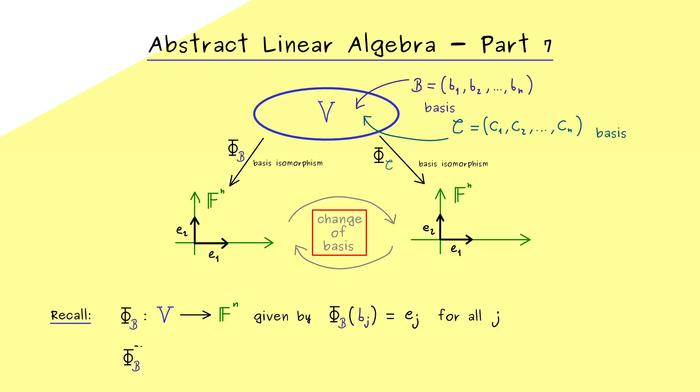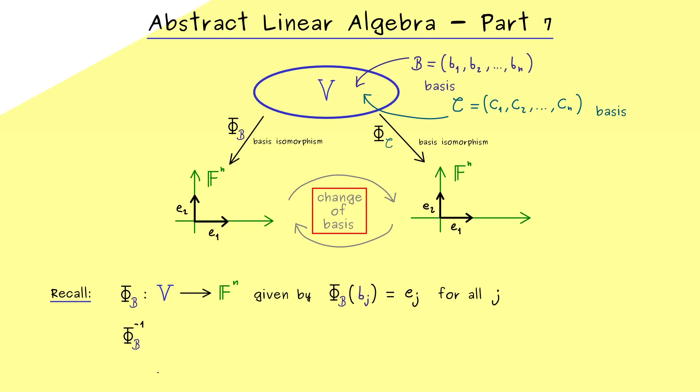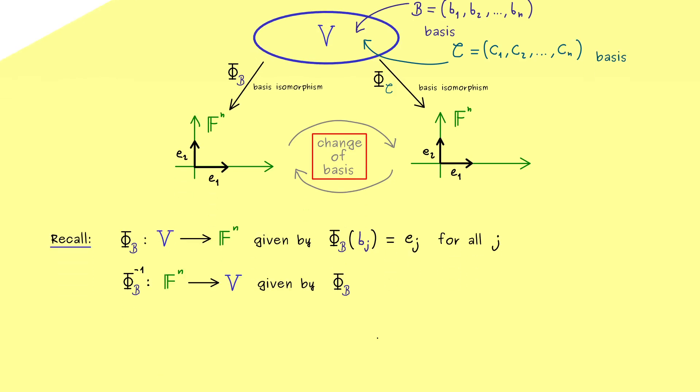This implies that we already know what the inverse φ^(-1) does. Namely it sends F^n to V and it maps the canonical unit vector ej to bj. So we also see that in the picture above it's simply this arrow backwards.